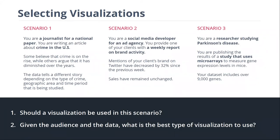Let's look at some scenarios, starting easy and getting harder. You are a journalist for a national paper writing an article about crime. Some people think crime is going up; others say it's diminished. But the data tells a different story depending on the type of crime, the geographic area, and the time period being studied. Should we use a data visualization here? I think we should, because we get a different story depending on which part of the data we're looking at — there's a little bit of complexity there.